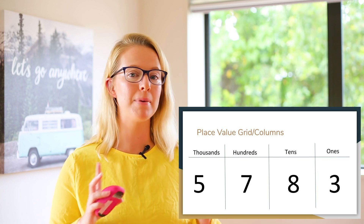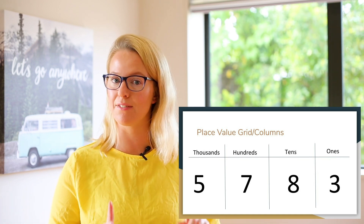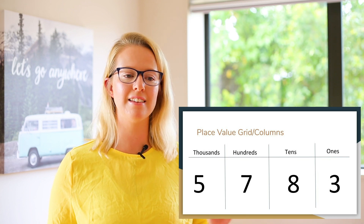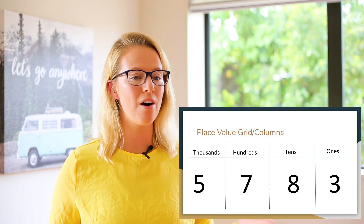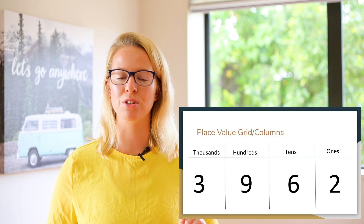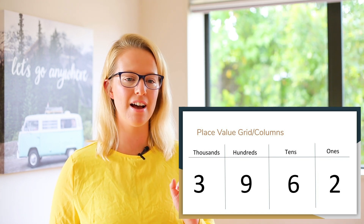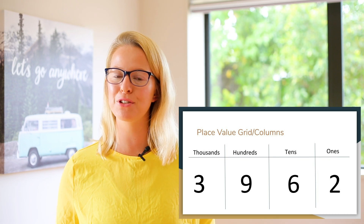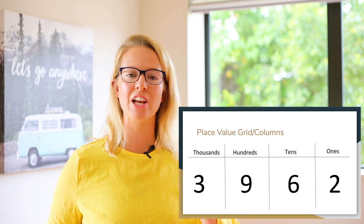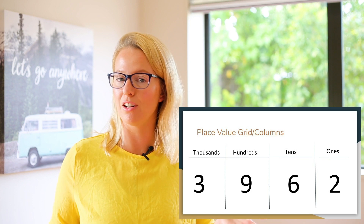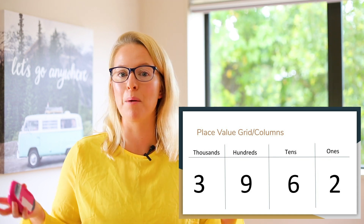Let's look at another digit — the number seven. We want to figure out what the value of the seven is in this whole number. First of all, we need to look at what column it's in. Looking at my place value grid, I can see that the seven is in the hundreds column, which tells me it's seven hundreds, or seven hundred. Let's try another: the number two. We check which column it's in — the two is in the ones column — so the value of this digit is two ones, or the number two.